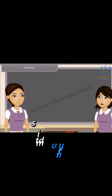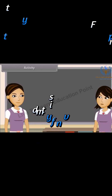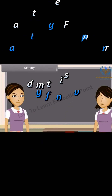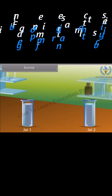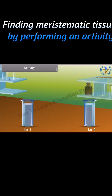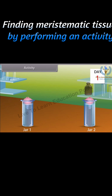We can prove that meristematic tissues are found by doing an activity. I will take a glass jar and Ankita, you will also take a similar glass jar filled with water. Then we will place same sized onion bulbs on each jar for 3 days to observe the growth of roots. We will measure the length of roots on day 1, day 2, and day 3.